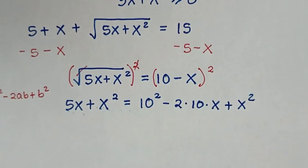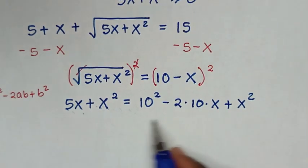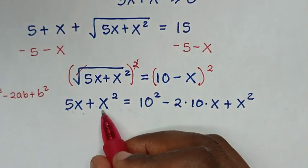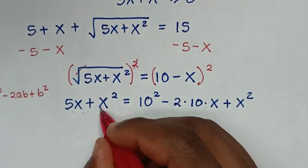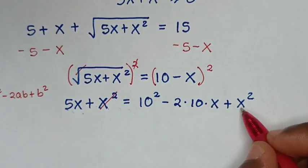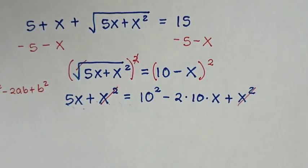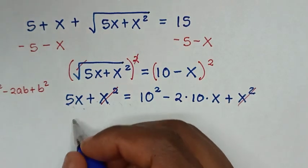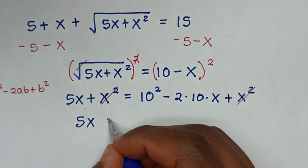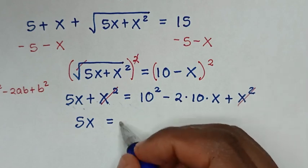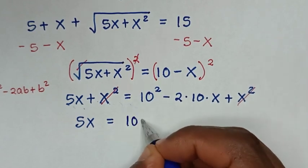In the next step, from this equation we can see that both sides have x squared, so the x squared terms cancel. It will be 5x is equal to 10 squared, which is 100,